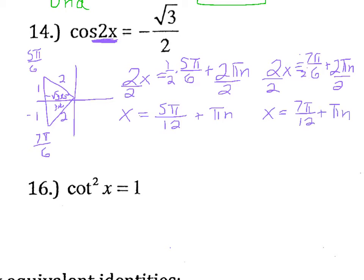You're still not done with the problem. You need to list all angles between 0 and 2 pi that follow these two formulas. For the first equation, our first x value is 5 pi over 12. To find the second value, add pi — using common denominators, add 12 pi over 12 — giving 17 pi over 12. Adding 12 pi again gives 29 pi over 12, which is too big. So 5 pi over 12 and 17 pi over 12 are the two answers for this formula.